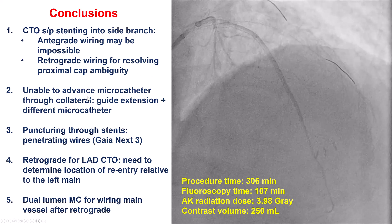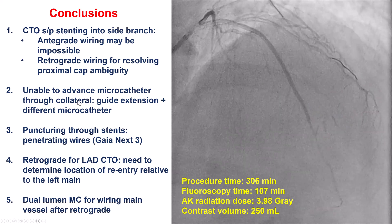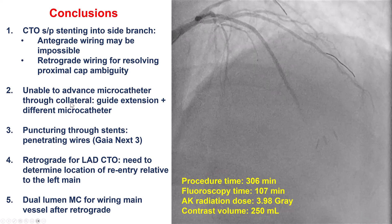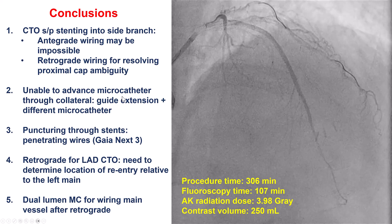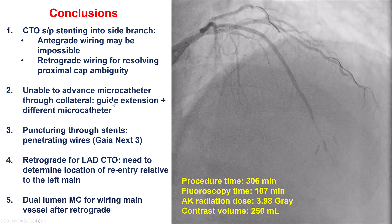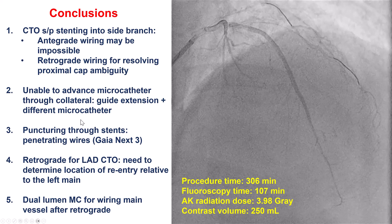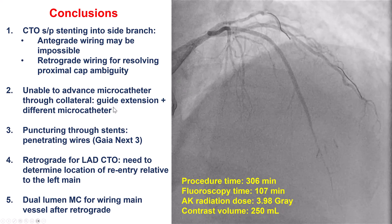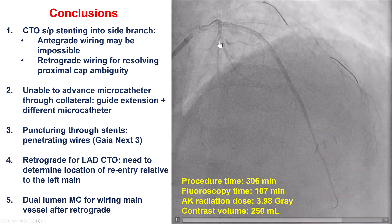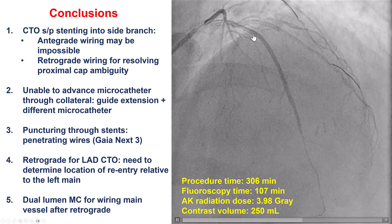The second challenge: we went retrograde, the wire went through but the microcatheter could not follow, and there are several steps we can take from that. What we did in this particular case is use a guide extension as well as a different microcatheter. We used a larger microcatheter — a Corsair instead of Caravel — and that helped track retrogradely.